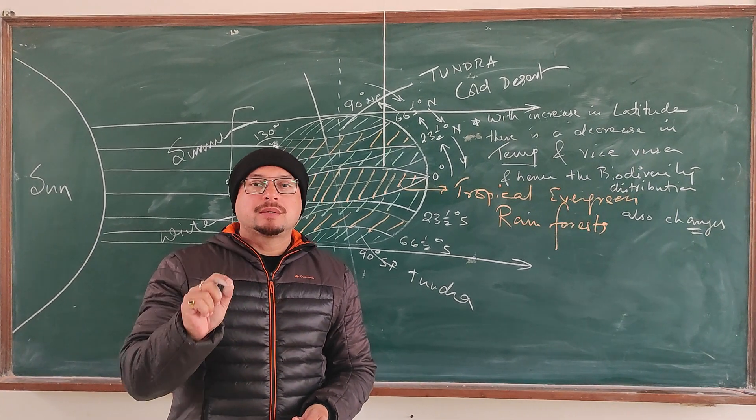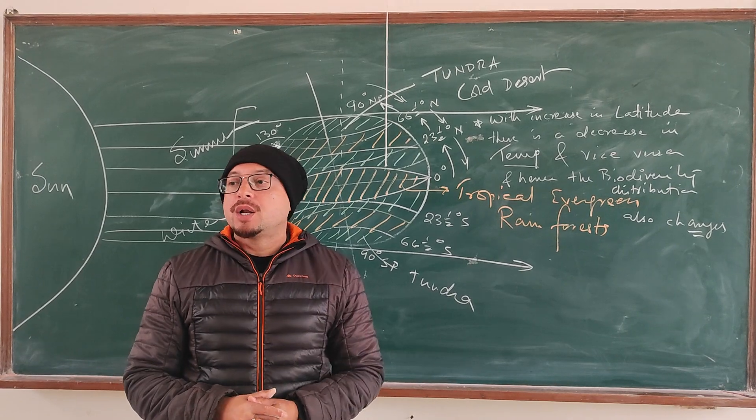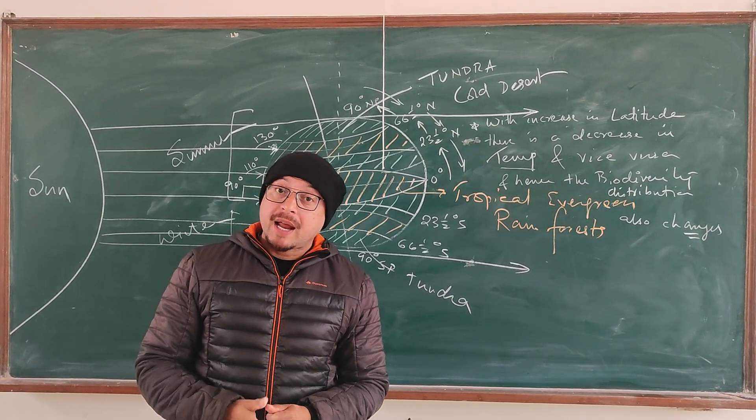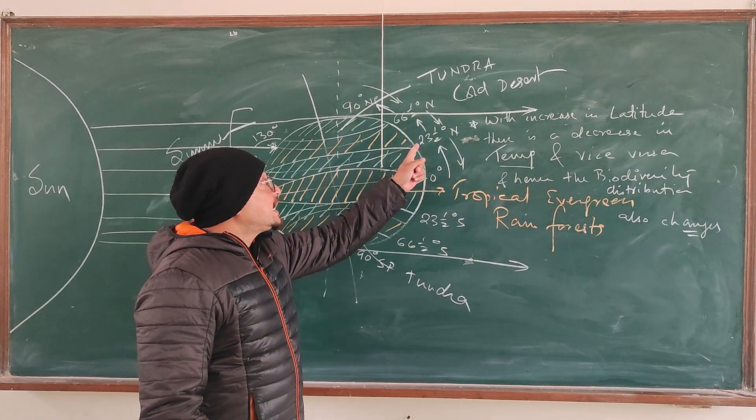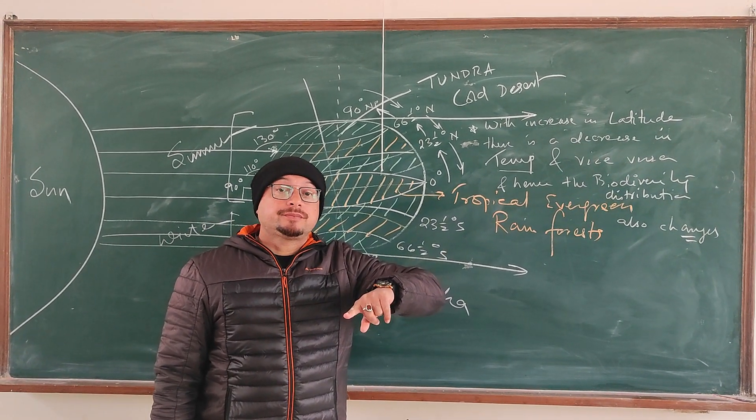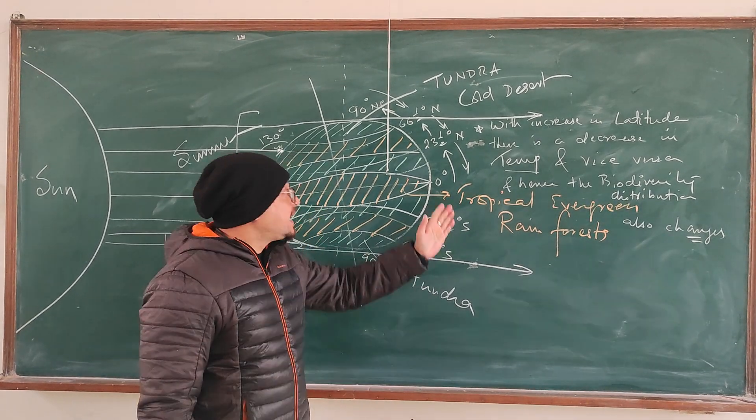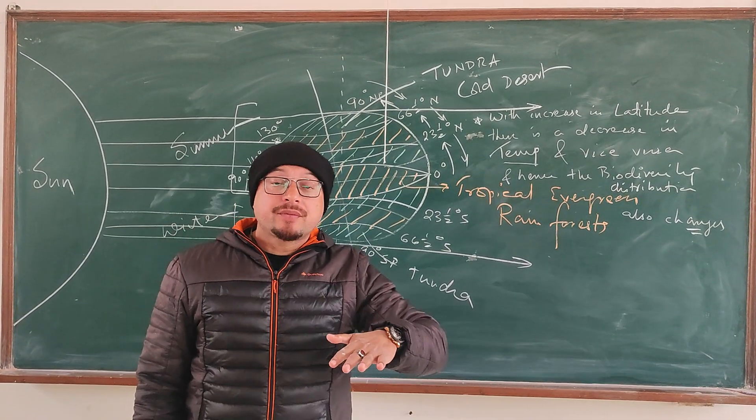We have assumed and considered a very important law. And what is that? With increase in latitude, there is a decrease in biodiversity. One very important point: with increase in latitude, there is a decrease in biodiversity.